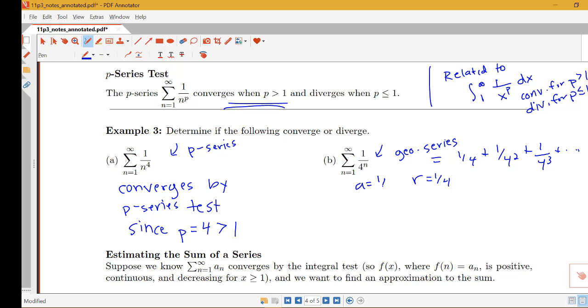So it's geometric with a equals 1/4 and r equals 1/4 but if we were just interested in convergence or divergence here I would say that this converges by the geometric series test since the absolute value of r equals 1/4 is less than 1.